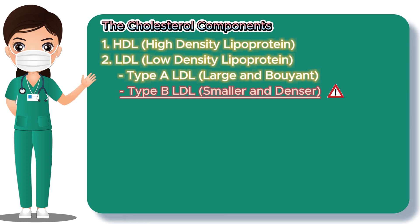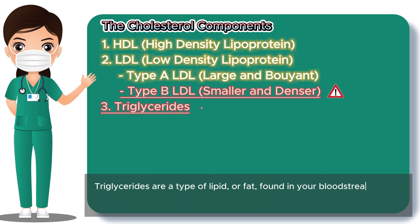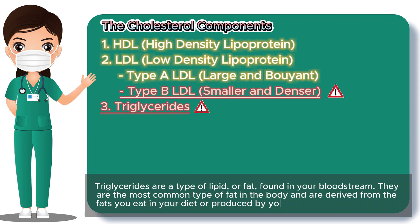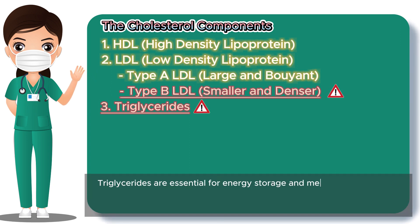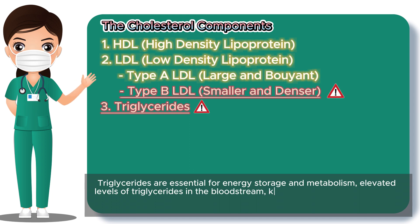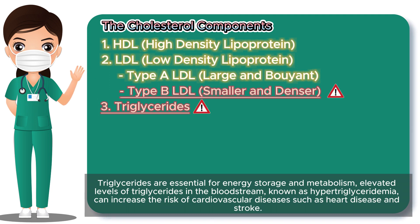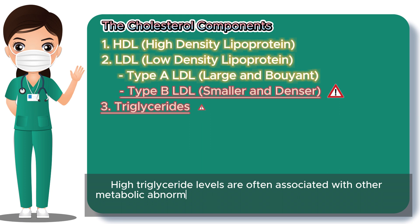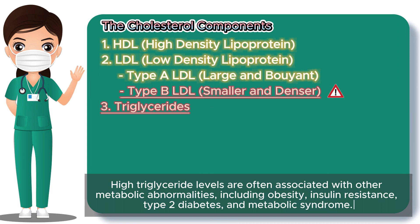Lastly, it is important to highlight triglycerides. Triglycerides are a type of lipid, or fat, found in your bloodstream. They are the most common type of fat in the body and are derived from the fats you eat or produced by your liver from excess calories. Triglycerides are essential for energy storage and metabolism. Elevated levels of triglycerides, known as hypertriglyceridemia, can increase the risk of cardiovascular diseases such as heart disease and stroke. High triglyceride levels are often associated with obesity, insulin resistance, type 2 diabetes, and metabolic syndrome.